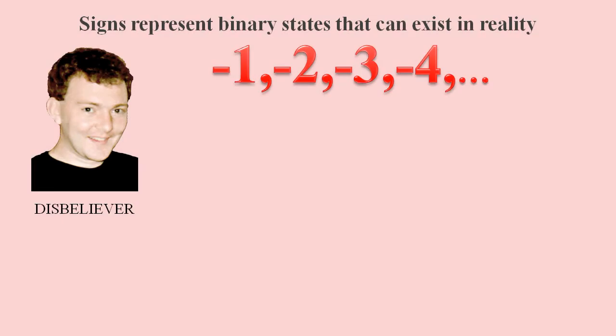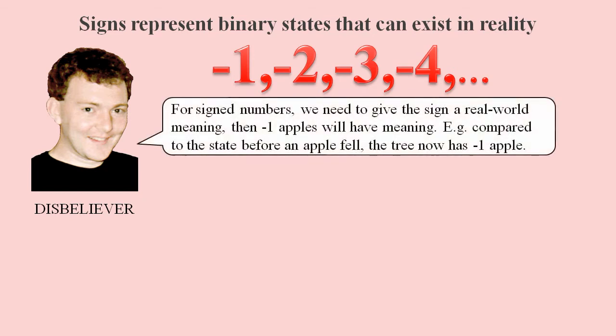The answer is easy. Just as numbers describe physical quantities, other mathematical symbols, including the negative sign, must also describe physical objects or actions. Once we give the negative sign a meaning for this particular context involving apples, then minus one apple will have a meaning in our shared physical reality.